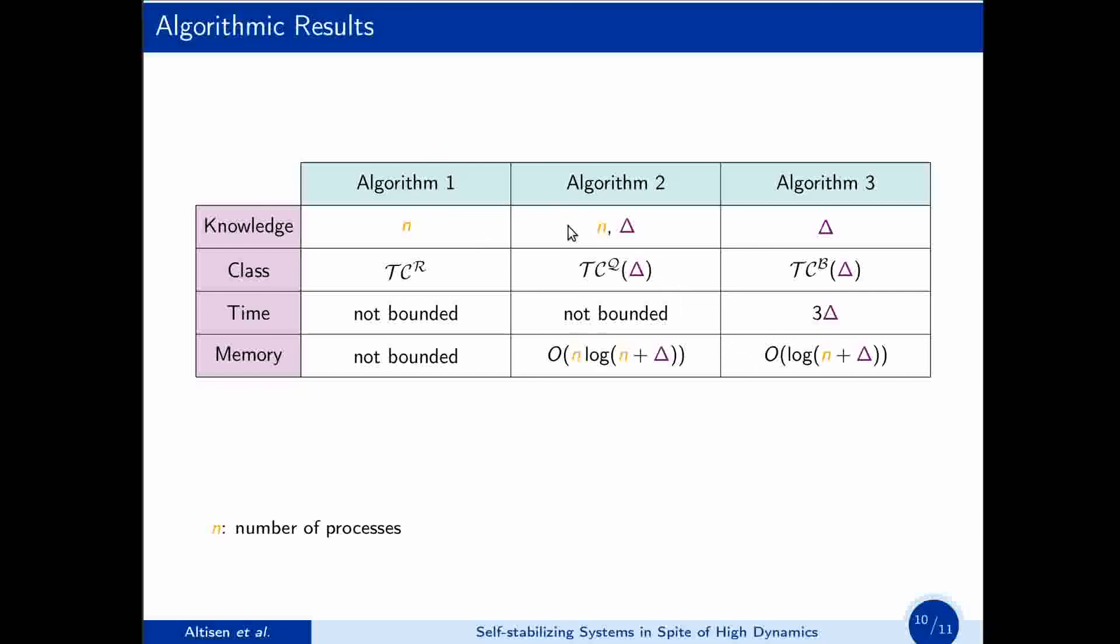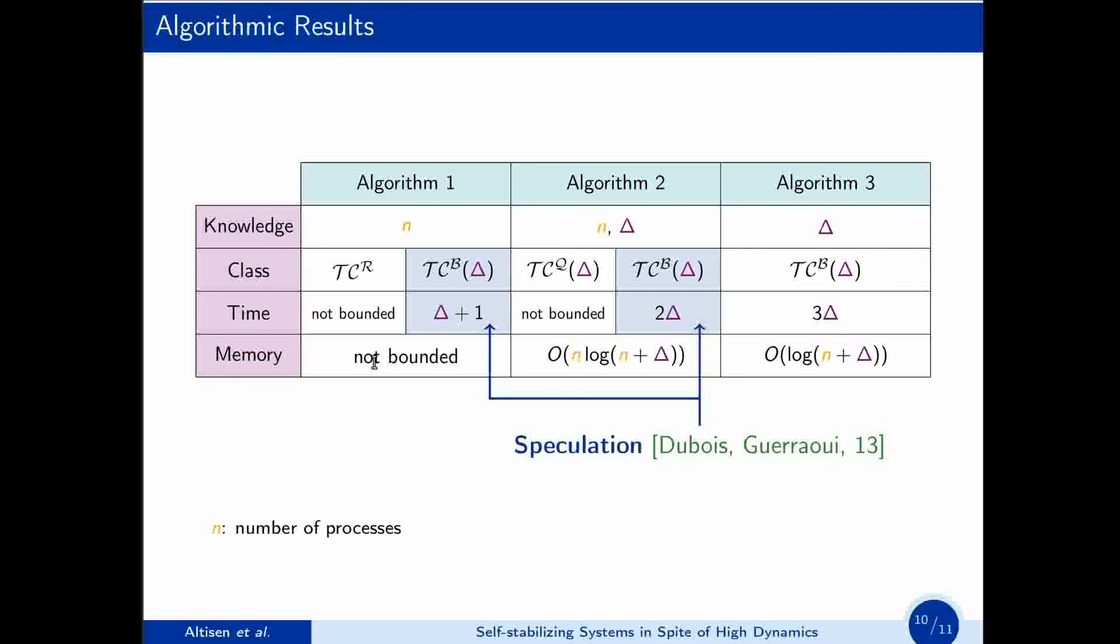Notice that both algorithm 1 and algorithm 2 require the exact knowledge of n, the number of processes, since we showed it is necessary for classes TCR and TCQ-delta. Notice also that TCB-delta is included in TCR and TCQ-delta. So, algorithm 1 and algorithm 2 can be used on a TVG of TCB-delta. In this more favorable case, we can bound the time needed to elect a leader. It is respectively delta plus 1 rounds and 2 delta rounds. This means that our algorithms 1 and 2 are speculative. They offer better performances in more favorable cases.